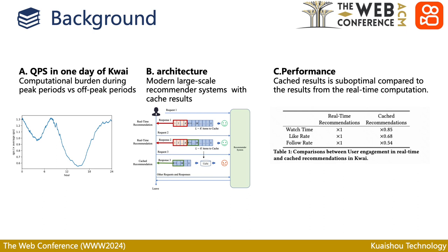Therefore, result caching is used to balance the computational burden and the recommendation performance in large-scale recommender systems, and the average user engagement of cached recommendations is lower than that of real-time recommendations.